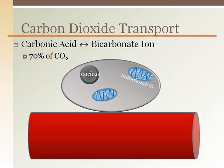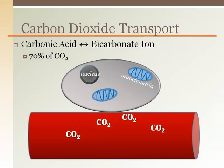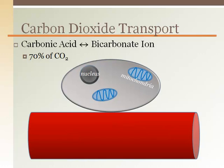When carbon dioxide is made in the mitochondria of our cells, the carbon dioxide diffuses out of the cell and into the blood to be transported back to the lungs. There are three different ways that carbon dioxide is transported in the blood.